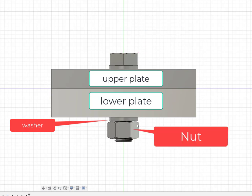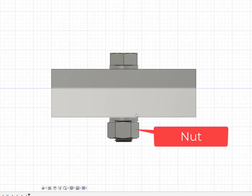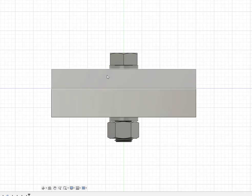If we now tighten this nut on this bolt, we're going to subject these plates and the lower and upper washers to compression. At the same time, we are going to be subjecting the bolt between this head and the nut to tension.